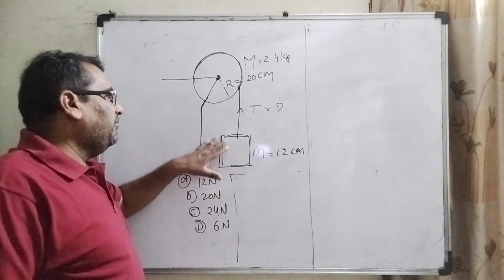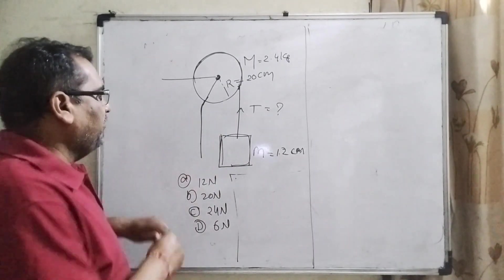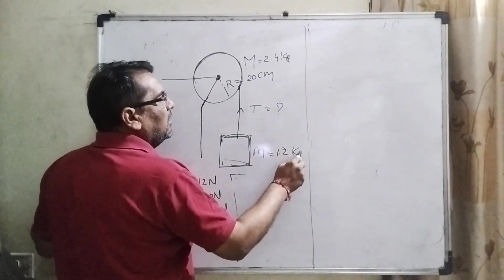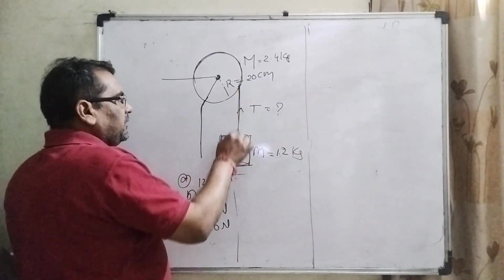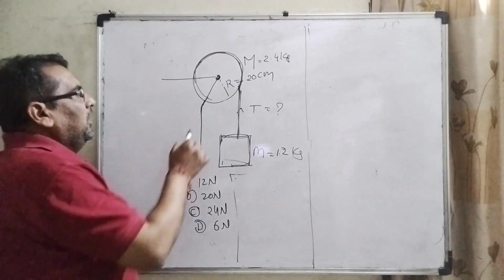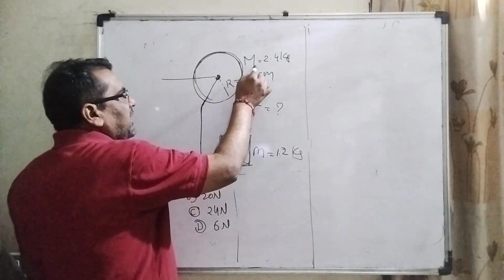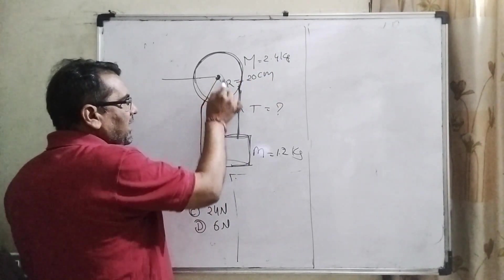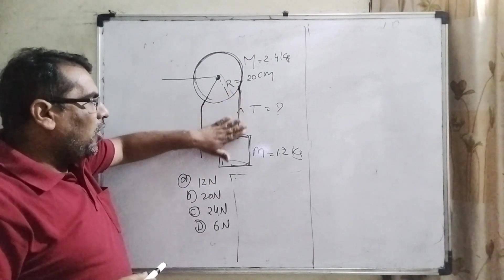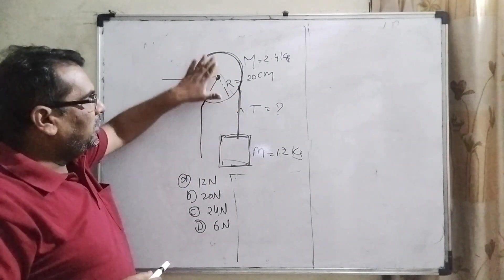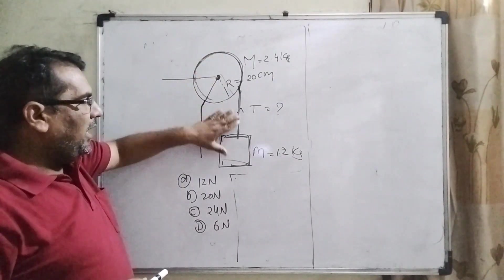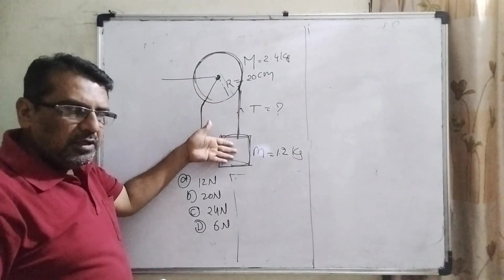The description of the figure: a block of mass 1.2 kilogram is connected with a rope, and the rope is mounted on the disc. The mass of the disc M equals 2.4 kilogram and the radius of the disc is 20 centimeter. The rope causes the disc to move, meaning torque is applied on the disc, and the block is moving in the downward direction.